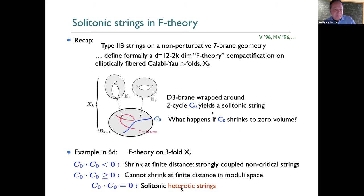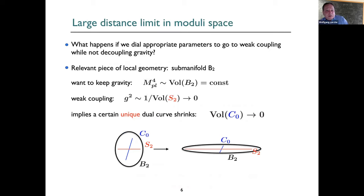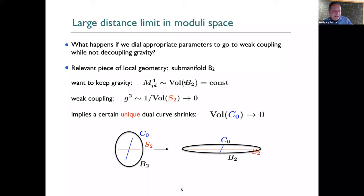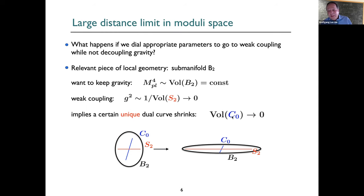If the self-intersection of the curve is positive or zero, it can only be shrunk at infinite distance in moduli space. Vanishing self-intersection means you can get solitonic heterotic strings. Consider a parameter in moduli space corresponding to the gauge coupling: if you go to vanishing gauge coupling while keeping gravity — so the Planck mass should not go to infinity — then we require the volume of the base manifold to stay constant. But vanishing gauge coupling means the cycle becomes very large, so another cycle must shrink to zero size.